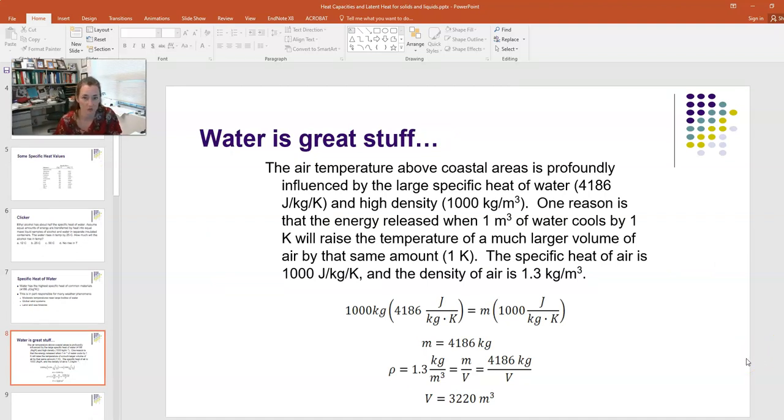To put some numbers to this and make it more concrete, I'll do an example problem. The air temperature around coastal areas is very influenced by the high specific heat of water, 4186 joules per kilogram per Kelvin. Water also has high density, 1000 kilograms per meter cubed. If a relatively small volume of water, say one cubic meter of seawater, loses one degree C, it can actually heat up a very large volume of air.